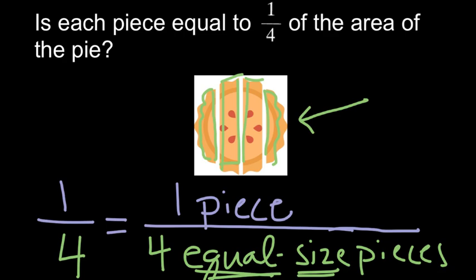Therefore, it is not one-fourth. So our answer is no. Each piece is not one-fourth or an equal share of the pie.